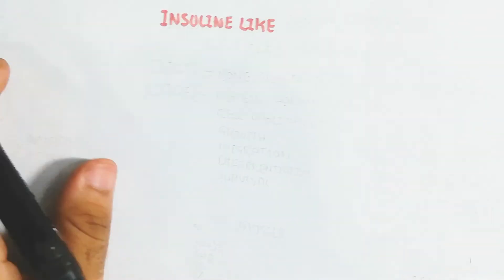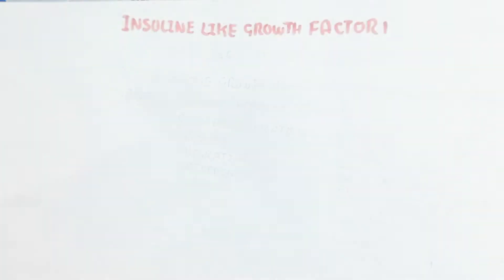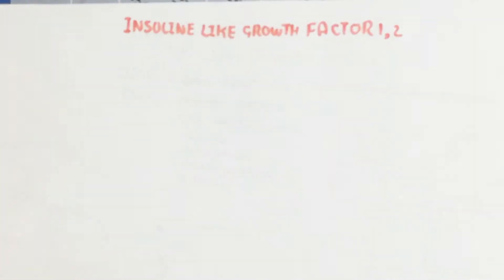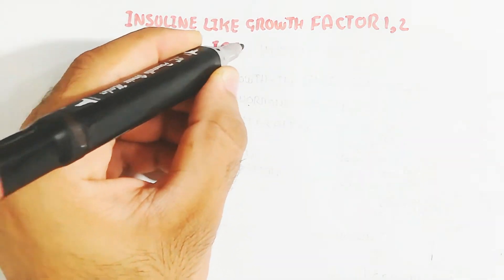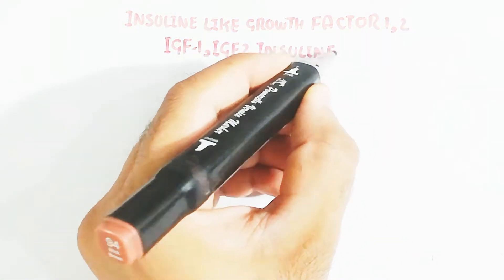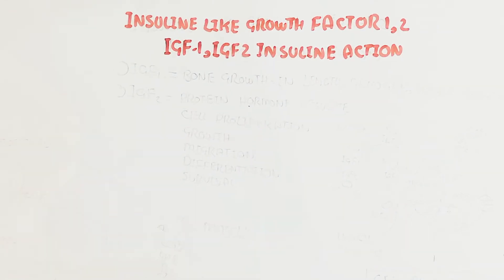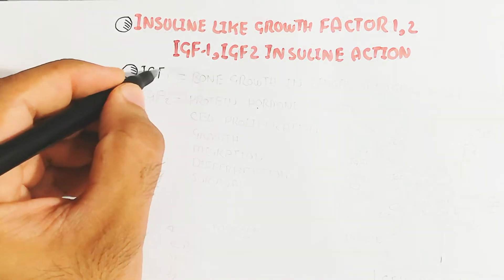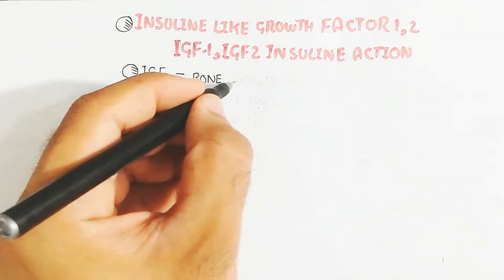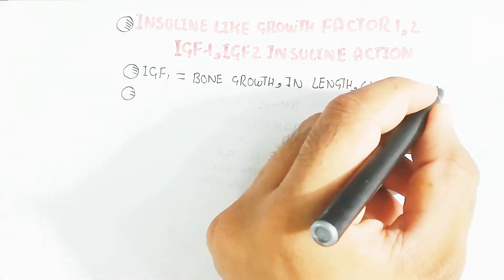In this video we will discuss insulin-like growth factor 1 and 2, with a focus on IGF-1 and how it works in body physiology. IGF-1 acts similarly to insulin. We will also learn about insulin action. IGF-1 is used for bone growth — increasing bone growth and length — as well as glycogen and muscle growth.